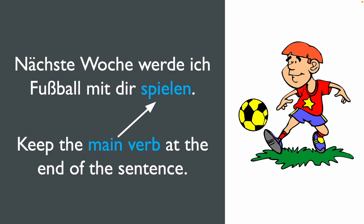Look at these examples. 'Nächste Woche werde ich Fußball mit dir spielen' — Next week I will play football with you. You see, we keep the main verb at the end of the sentence because 'werden', the auxiliary, takes the place of the verb in the second position.